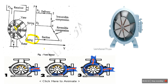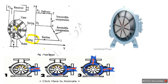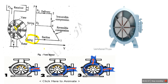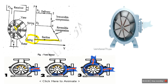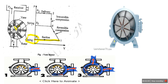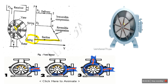The volume of air V1 at atmospheric pressure P1 is trapped between the vanes. A certain volume of air enters and is trapped between the vanes as the rotor, placed eccentrically in the outer casing, begins to rotate.